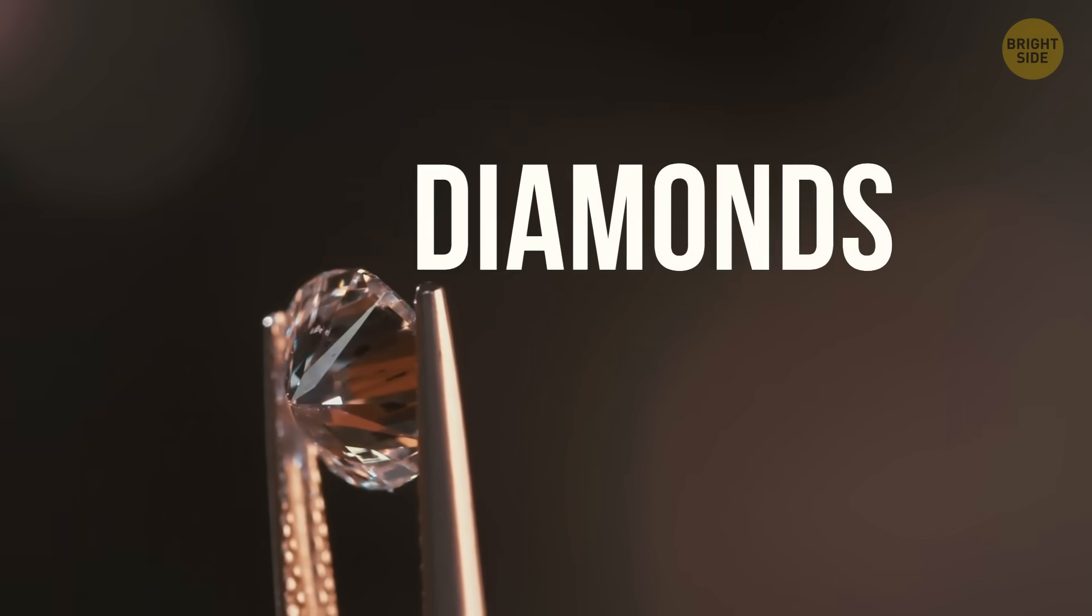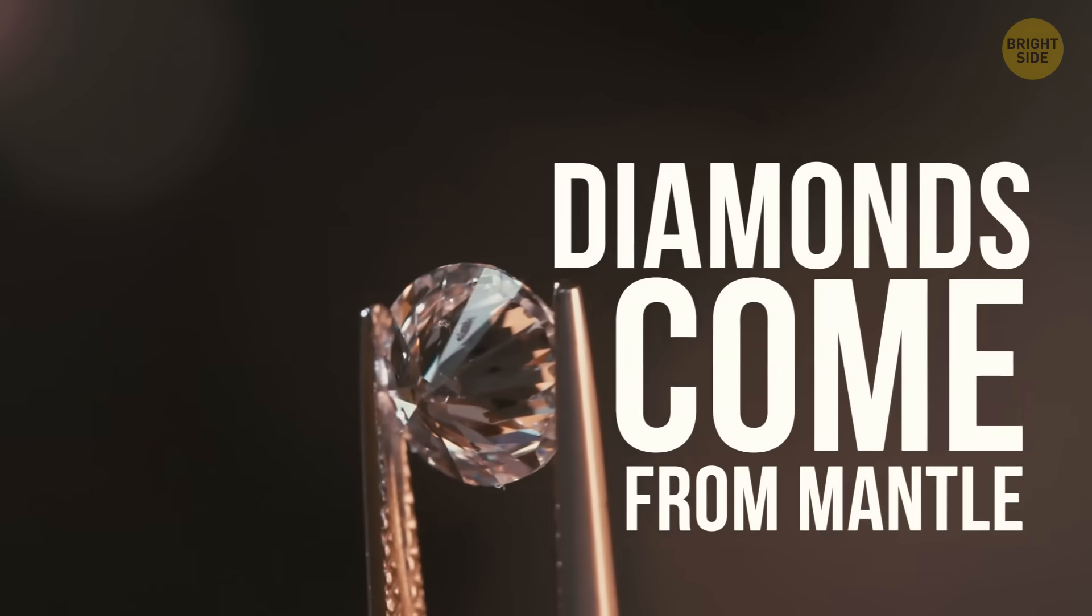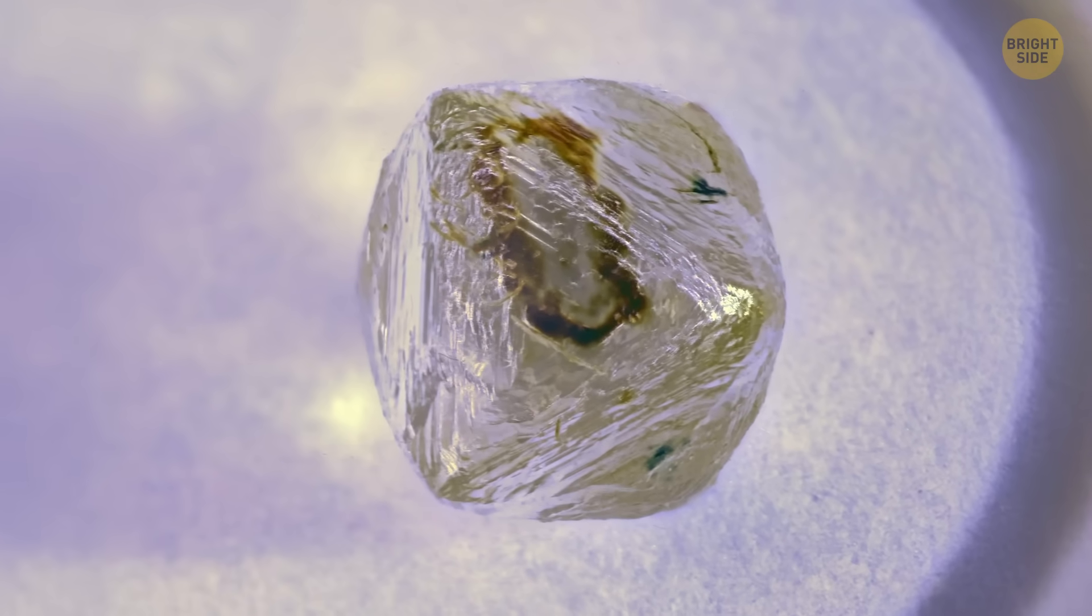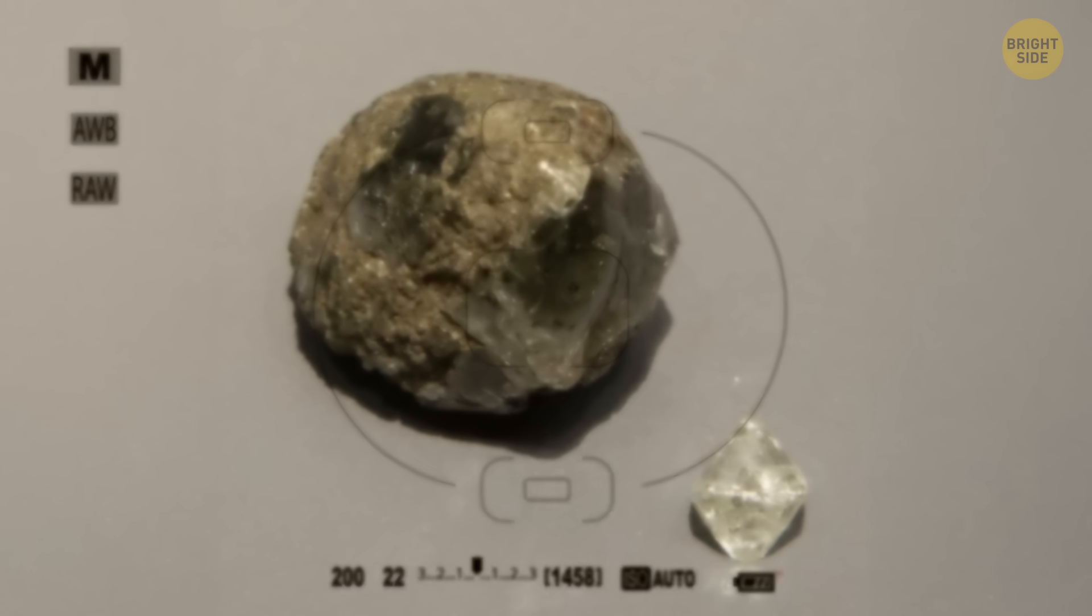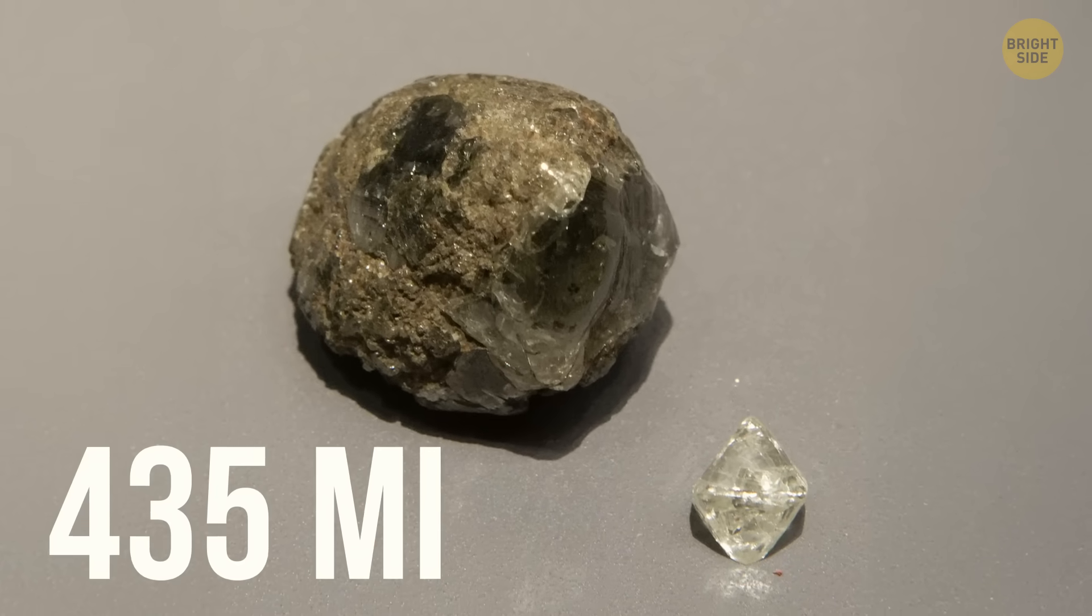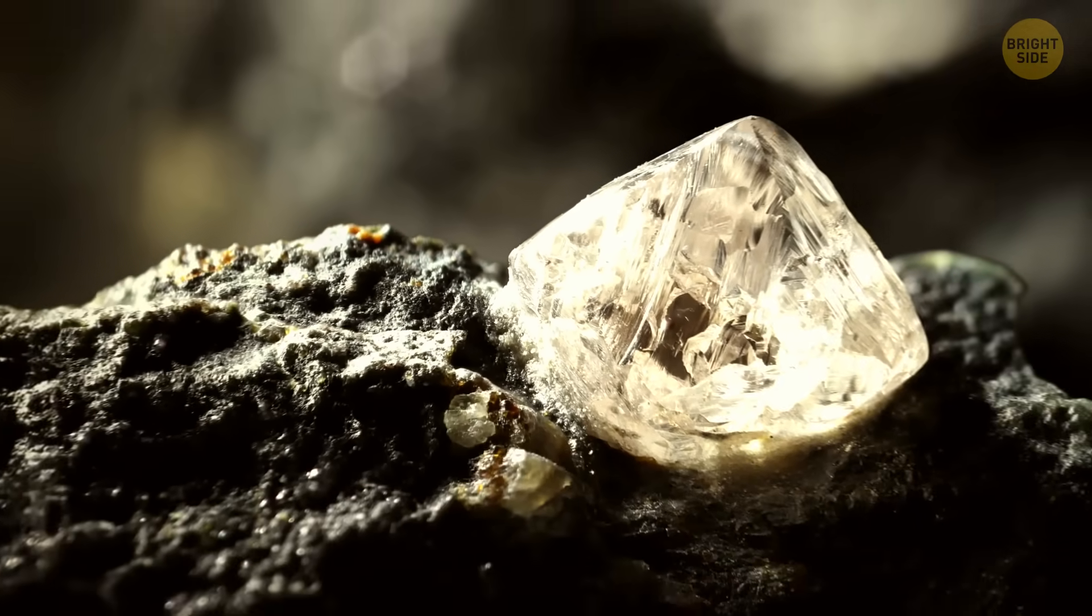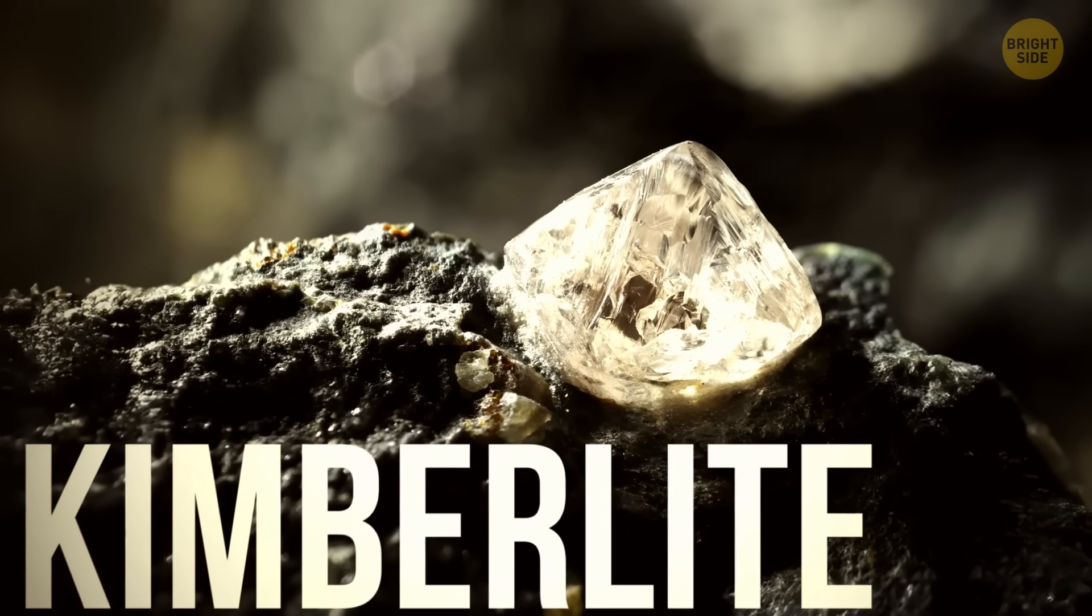Some of the diamonds we find on Earth come from the mantle. Most of these diamonds form at depths above 124 miles. But rarer, super-deep diamonds may form as deep as 435 miles. These diamonds are brought to the surface by a certain kind of volcanic rock called kimberlite.